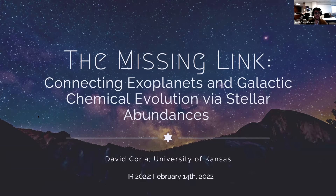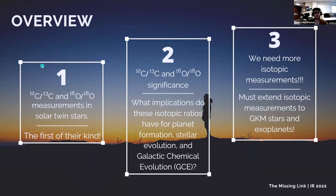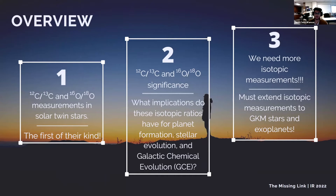So as the title suggests, I'm going to be talking about stellar abundances, in particular isotopic carbon and oxygen abundances in dwarf stars, and how they relate to both exoplanets and to galactic chemical evolution. I'll begin by discussing the isotopic carbon oxygen ratios I've measured in solar twin stars and what makes them the first measurements of their kind. Second, I'll go over the significance of these ratios and what they can tell us about planets, stellar and galactic chemical evolution. Finally, I will talk about why we need more isotopic abundance measurements in dwarf stars and my plans to build up this database.